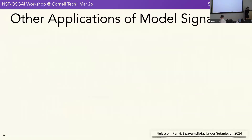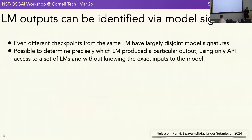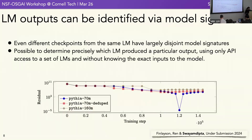From an audience question: the units on the training step axis in the plot are checkpoints — for example, 1.2 refers to a checkpoint number, not a raw training step.